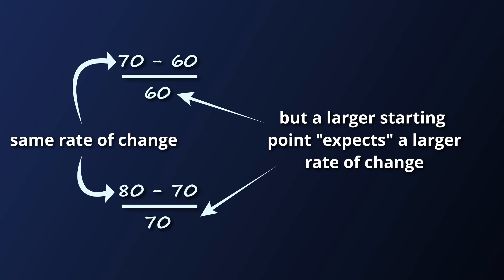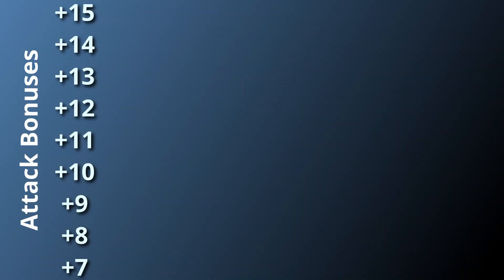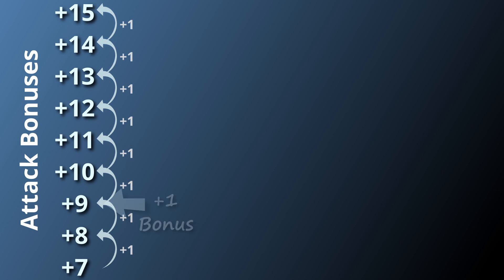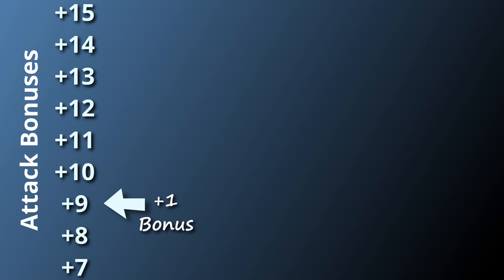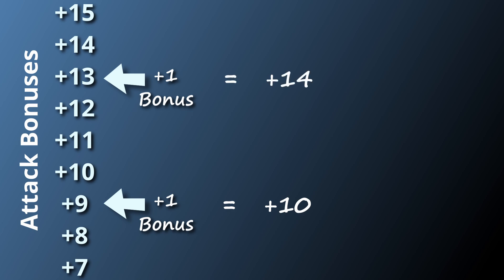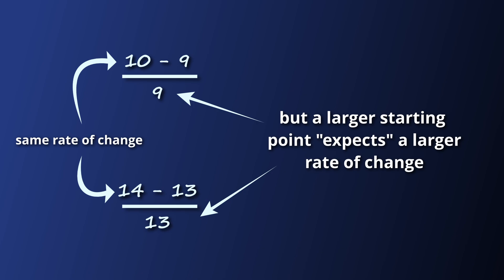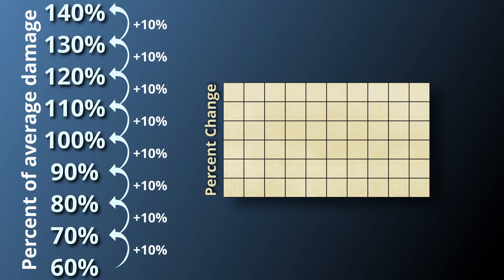Now when an attack bonus increases by plus one, are you expecting to get more out of it depending on where you started? In other words, is a plus one bonus added to a plus nine to-hit expected to yield more than a plus one added to a plus thirteen to-hit? I don't really think so. A plus one turns a plus nine into plus ten, and a plus one turns a plus thirteen into plus fourteen. The amount from where you started has no bearing on where you end up. That is actually what you're doing when you use percent increase — you divide the change by the starting value.